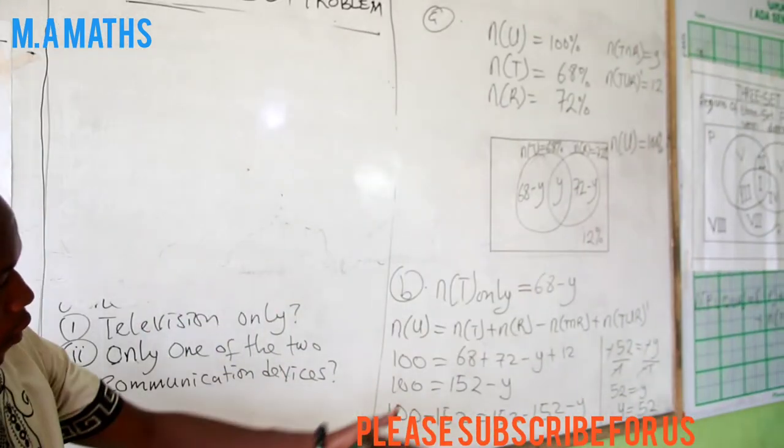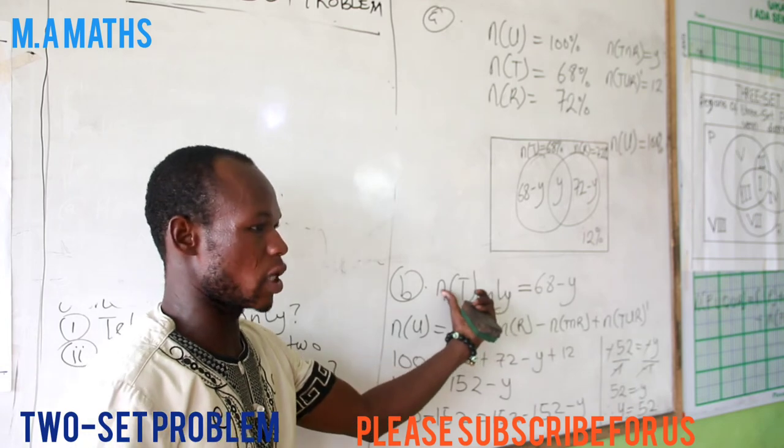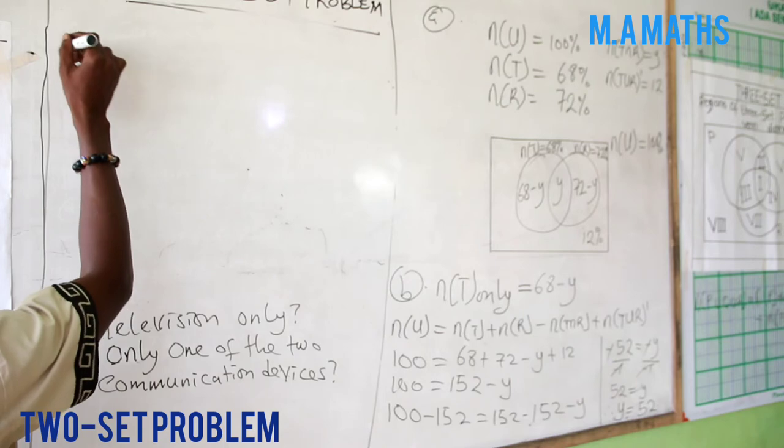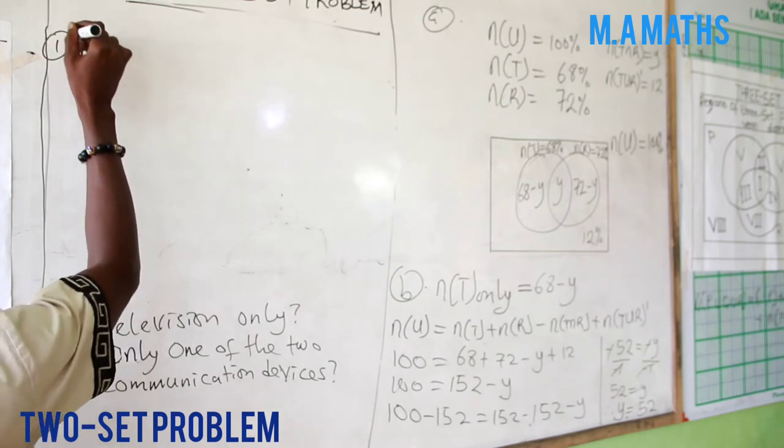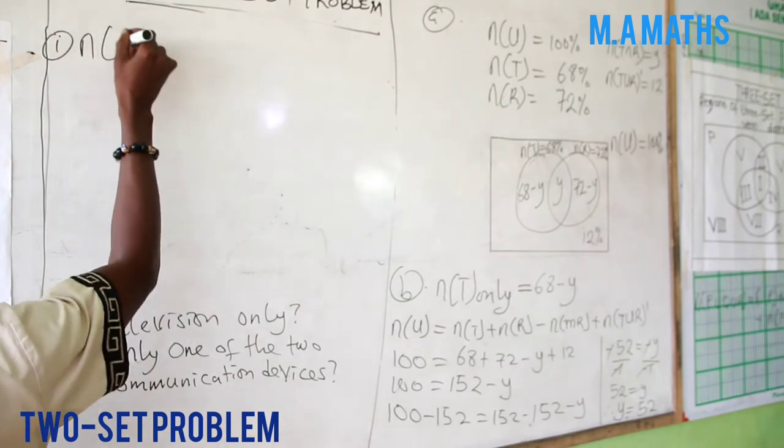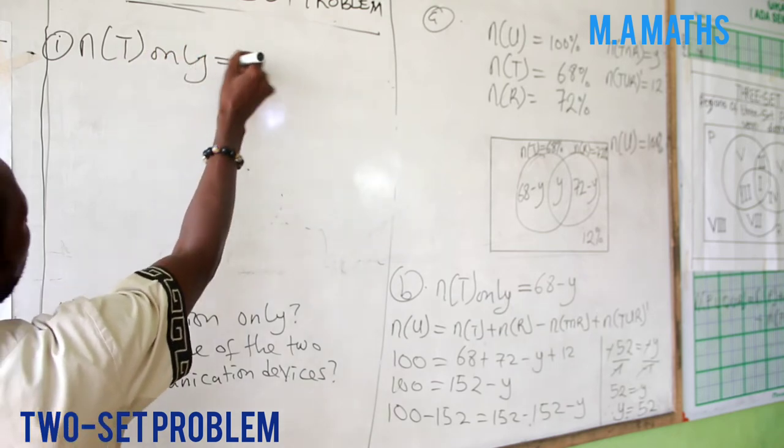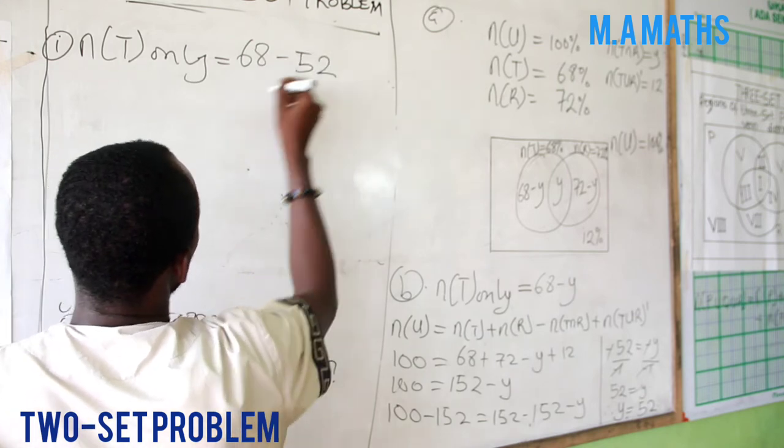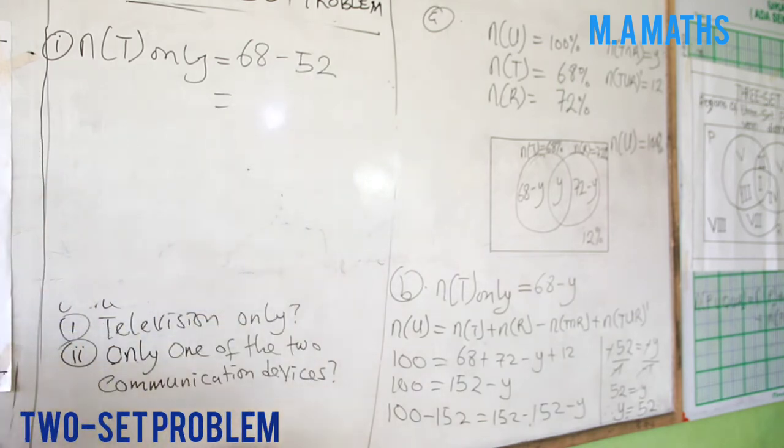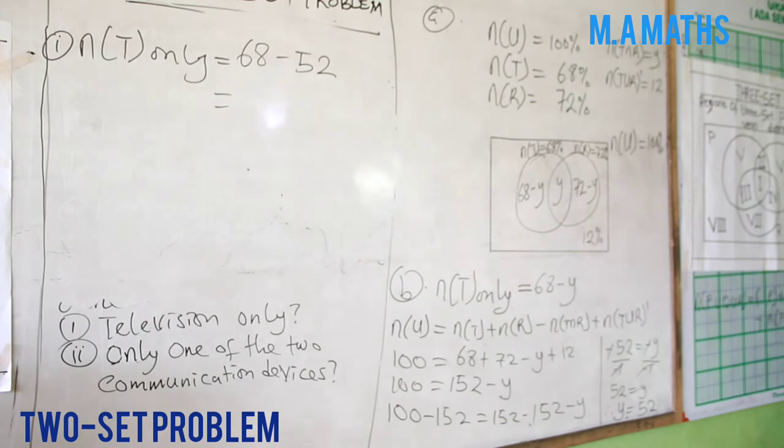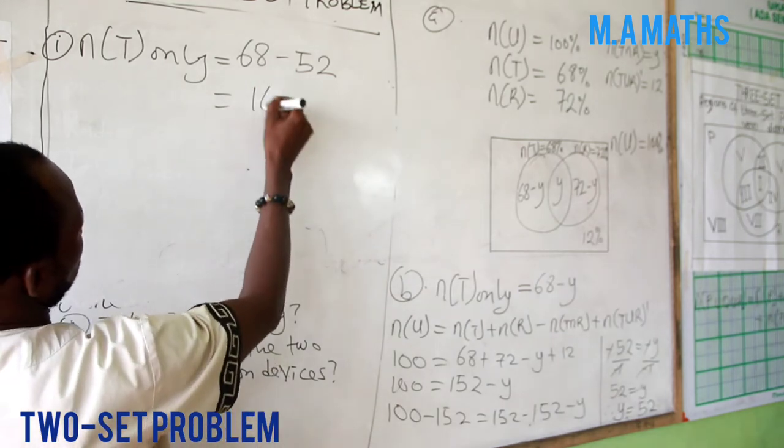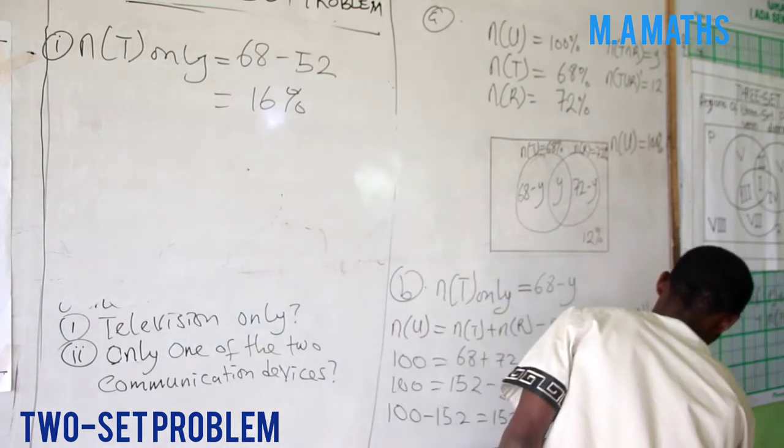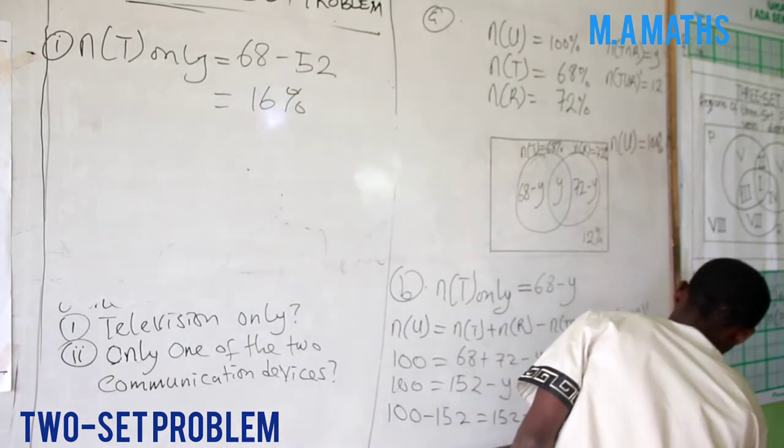At this stage we know y, so we just substitute it. Our n(T) only would be equal to 68 minus 52. That gives us 16 percent. Remember to leave your answer in percentage. This is 52%.